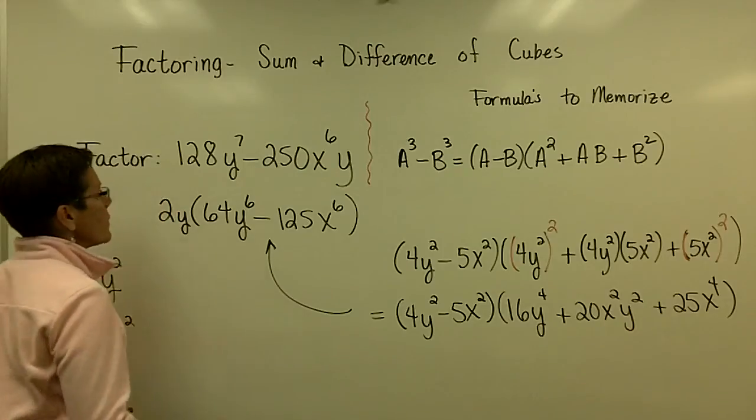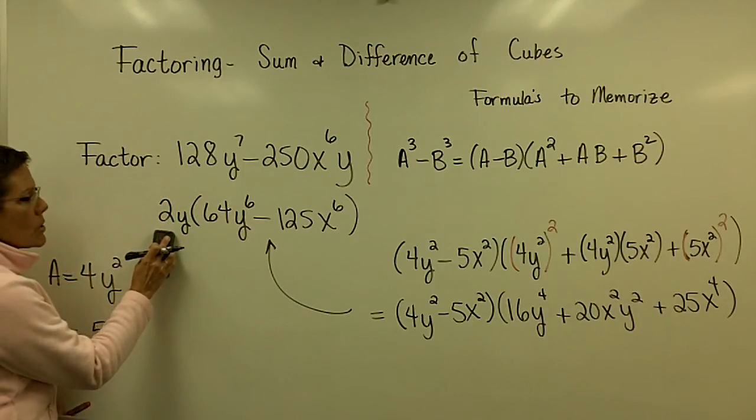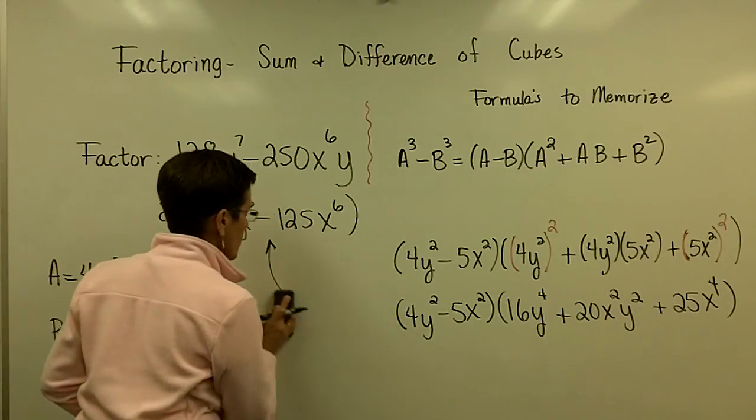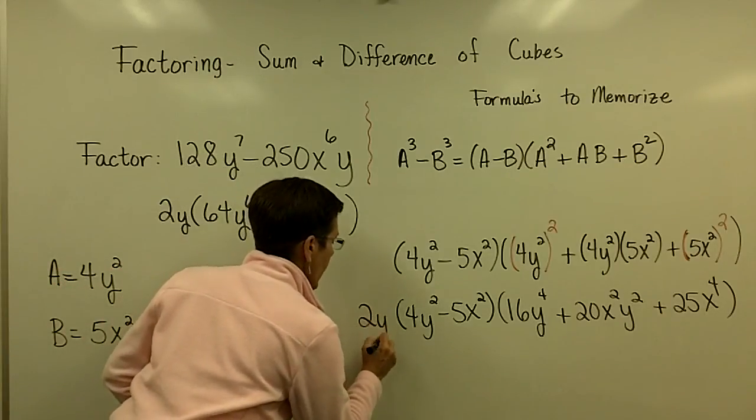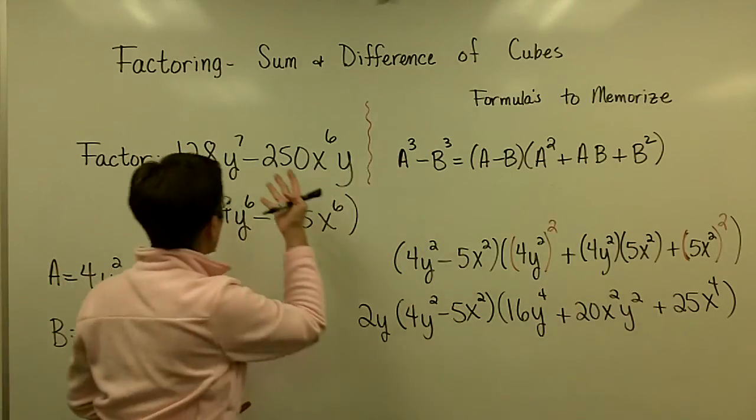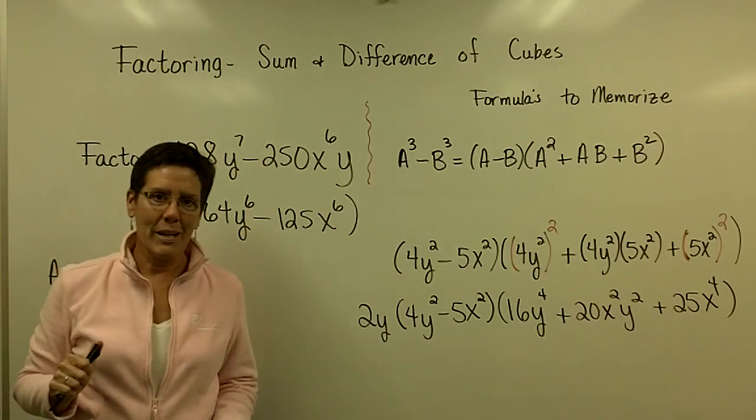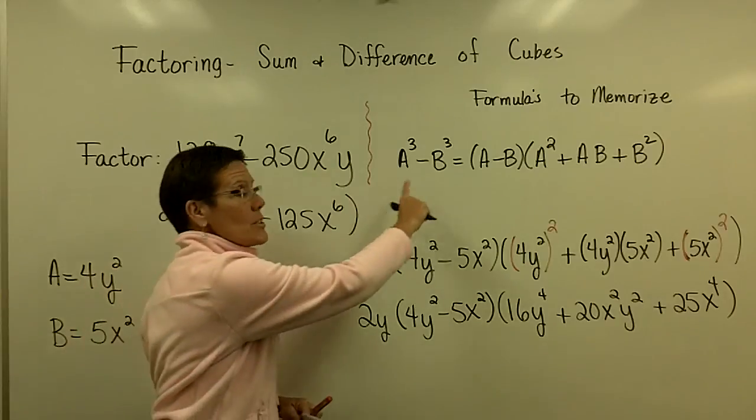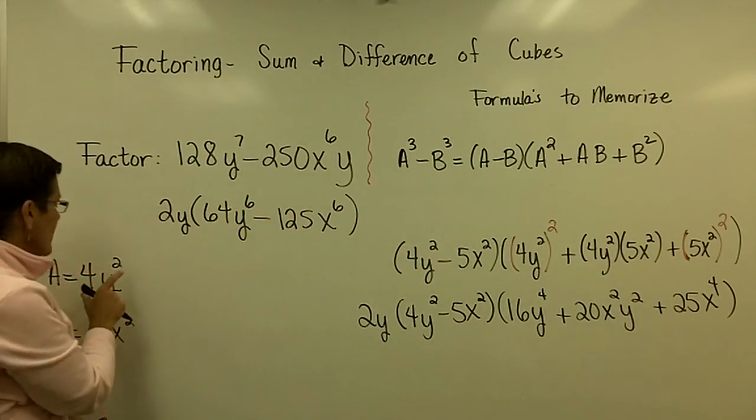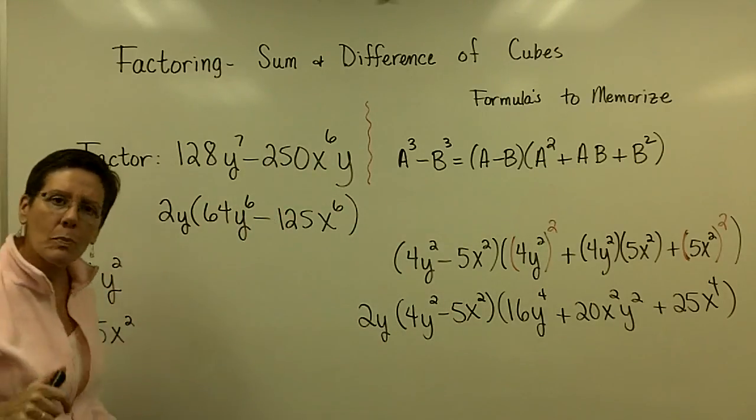But don't forget, way back at the beginning, you took a greatest common factor out. That was a factor of 2Y. And this is my factored form of that original binomial. Some of the difference of cubes - got to have these formulas memorized. Got to be able to state what your A and B value is, and then just plug them in.